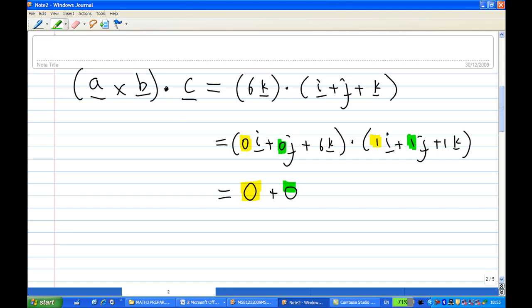This component of j, and the component of k will be 6 times 1, I have 6. So in the end, this triple product will be 6, a scalar.